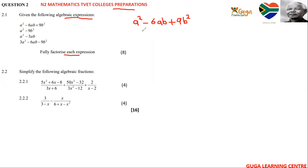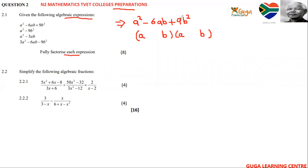To factorize it, you open one bracket and then another bracket. What are the factors of a squared? You've got a and a. Then on the last term, b squared — what are the factors of b squared? You've got b and b. Now we go to the 9. What are the factors of 9? Those two factors, when we add them, should give us the middle term, negative 6.